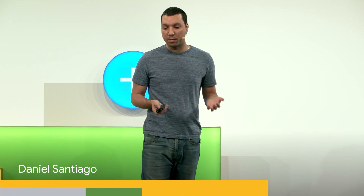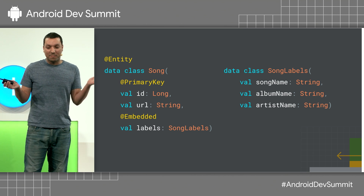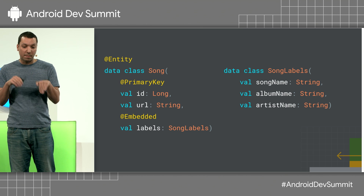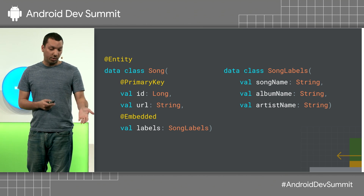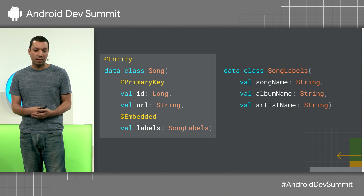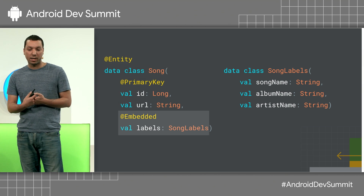One of the pretty cool new features we added in 2.1 is full-text search, or FTS. FTS is basically a way to index text documents and make them searchable. Imagine we have a music app and we want to add search functionality to it — you have a search box, you want to type something, and you want to be able to find songs. We store this song data in a table that's an entity, and we have labels as an embedded object.